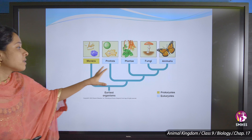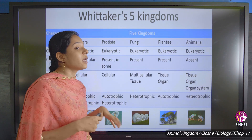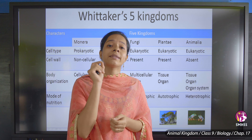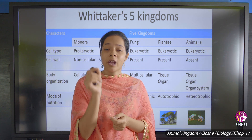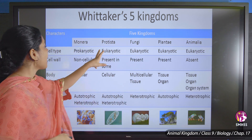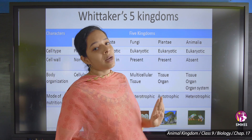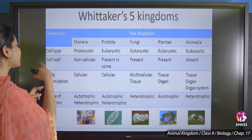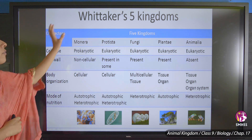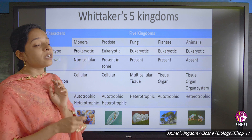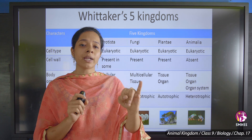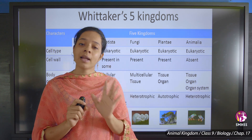These five kingdoms were classified based on prokaryotes and eukaryotes. Prokaryotes means single-cell organisms and eukaryotes means multicellular organisms. They are also classified based on cell wall, body organization, and mode of nutrition. The five kingdoms of Whittaker's classification are Monera, Protista, Fungi, Plantae, and Animalia.